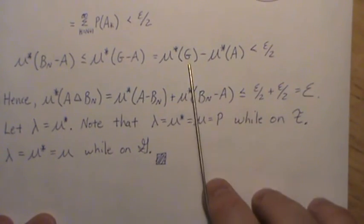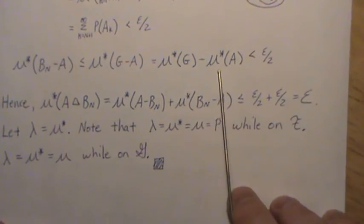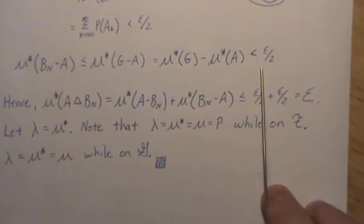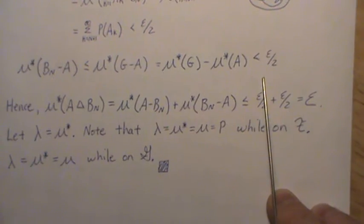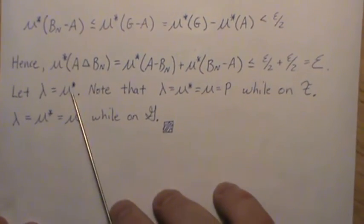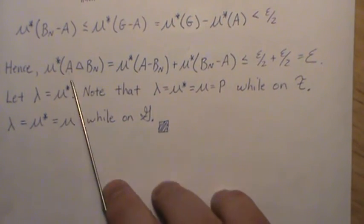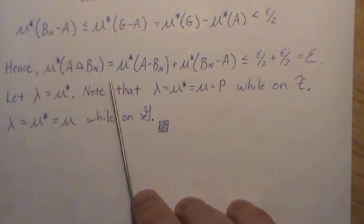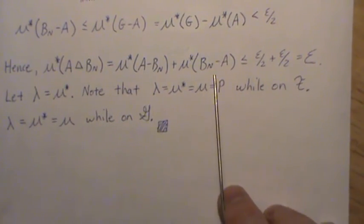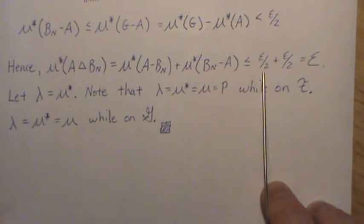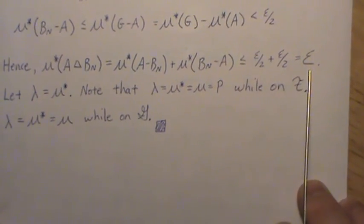So hence the symmetric difference of A and B_N, which are these two measures here, and we just looked at them, each of them are less than epsilon over two, which is epsilon. So then it's satisfying.